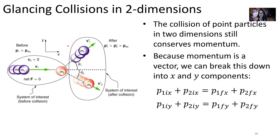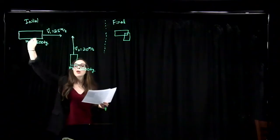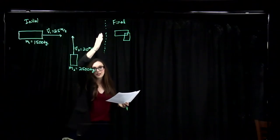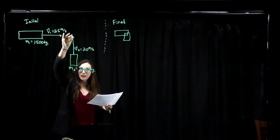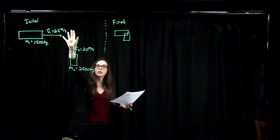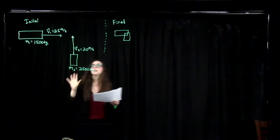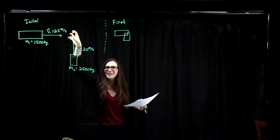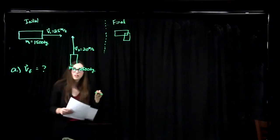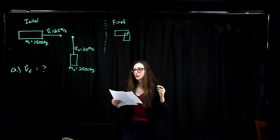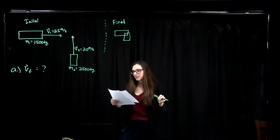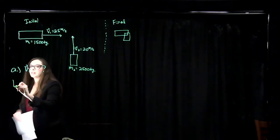We're going to do an example problem — a car crash in two-dimensional space. A car with mass 1,500 kilograms is traveling east at 25 meters per second in the positive x direction. It collides at an intersection with another car of mass 2,500 kilograms traveling due north at 20 meters per second. It's a perfectly inelastic collision — they stick together. We'll find the magnitude and direction of the velocity of the wreckage after the collision, ignoring friction between the road and objects.